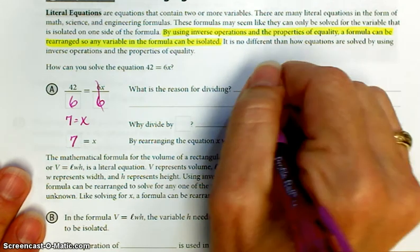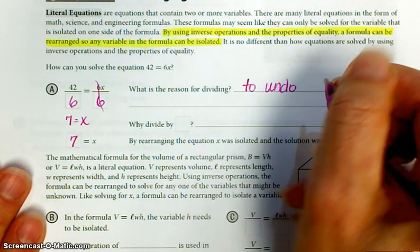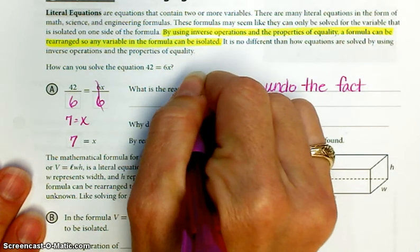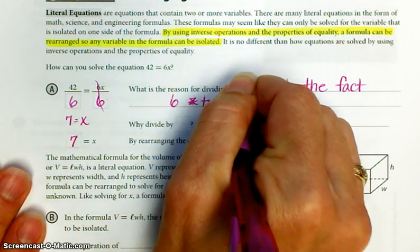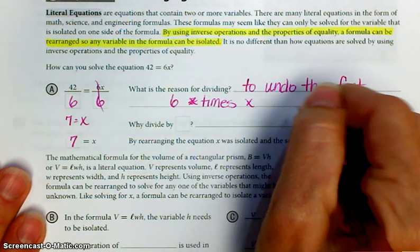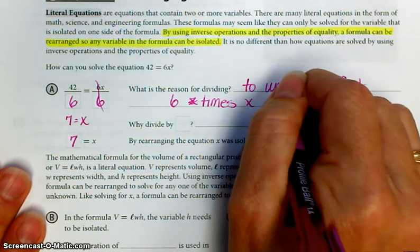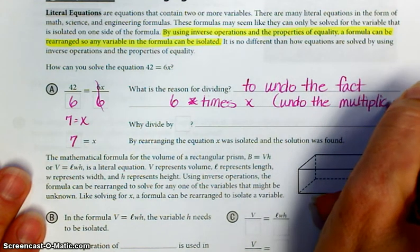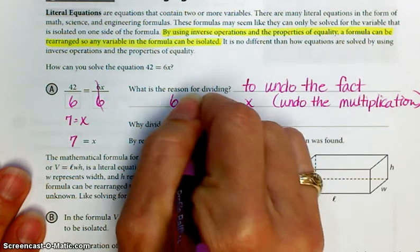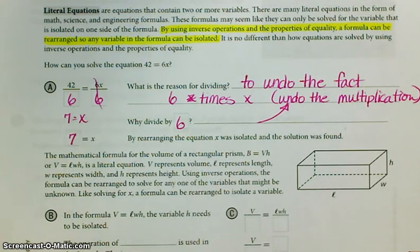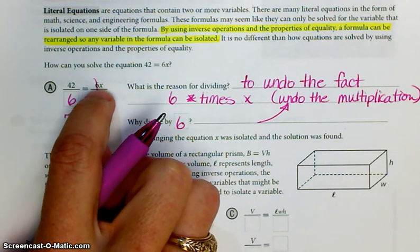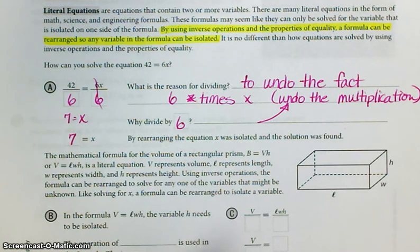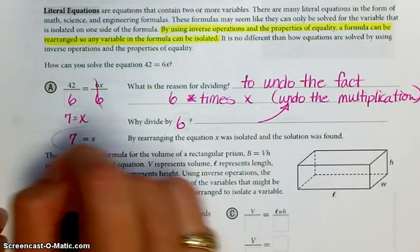So what is the reason for dividing? Basically, to undo the fact that you've got 6 times or multiplied times x. So you're undoing the multiplication. So why divide by 6? To do the inverse. It says 6 times x, so do the reverse to get rid of it. Divide by 6. By rearranging the equation, x was isolated and the solution was found. The solution is x equals 7.